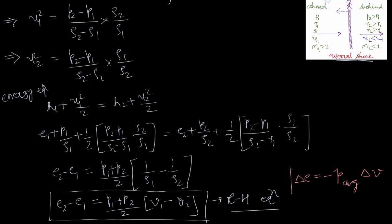This equation, delta e equals minus p_average times delta nu, is a form we are familiar with. It is nothing but the first law of thermodynamics with dq equals 0. Now we will plot this Rankine-Hugoniot equation on a PV diagram.